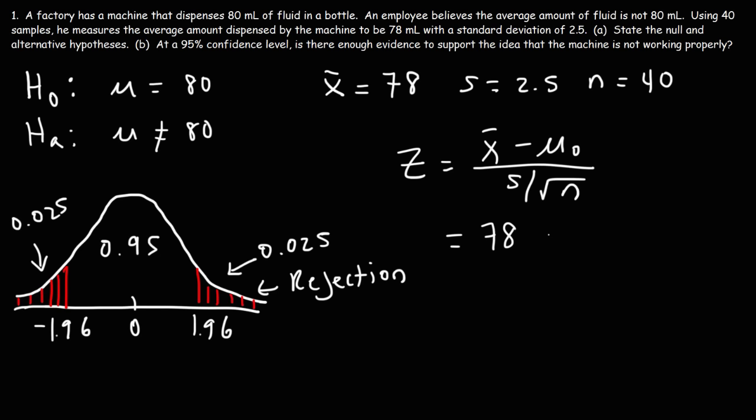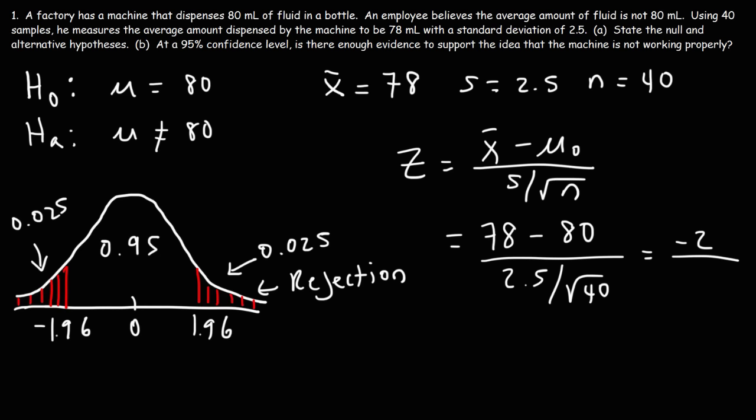So x-bar is 78, the hypothesized mean is 80, and the sample standard deviation is 2.5 over the square root of 40. 78 minus 80 is negative 2. And 2.5 divided by the square root of 40 is approximately 0.39528. So negative 2 divided by that number gives us a calculated z-value of approximately negative 5.06.